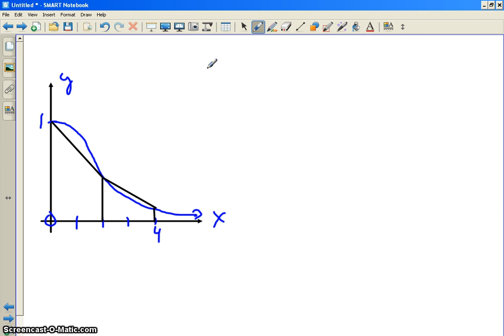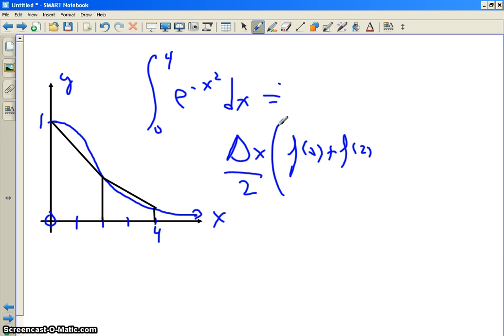So we're going to approximate this problem again. We're going to approximate it with the height of the trapezoid times the average of the bases. F of 0 plus f of 2, right? Now the average means I'm dividing by 2, right? But remember we factored that out? Because we've got to do it for the first trap and the second trap.